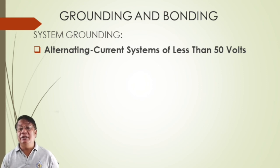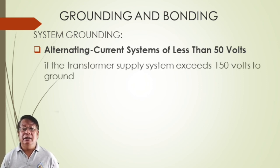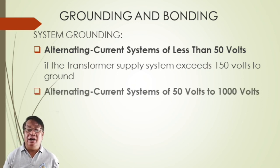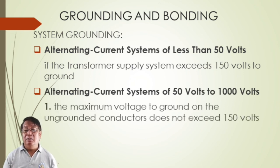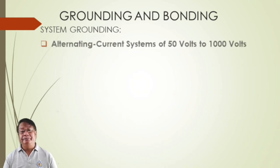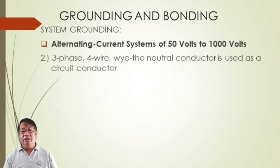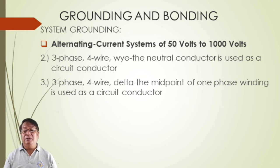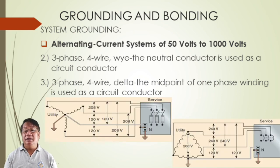For alternating current systems of less than 50 volts, if the transformer supply exceeds 150 volts to ground. For AC systems from 50 to 1,000 volts, the maximum voltage to ground from the ungrounded conductor shall not exceed 150 volts. For three-phase four-wire systems where the neutral conductor is used as a circuit conductor, or three-phase four-wire delta where the midpoint of one phase winding is used as a circuit conductor, grounding is required.